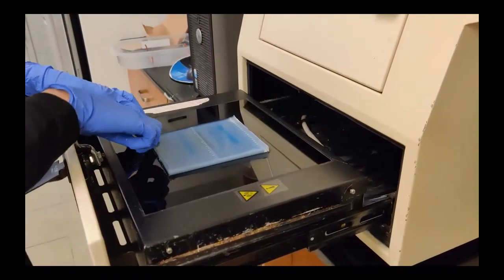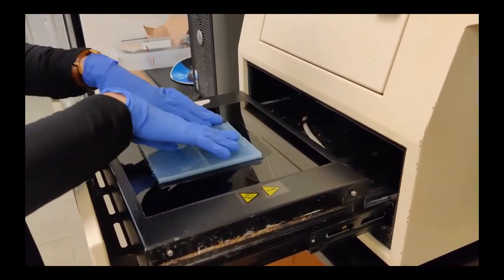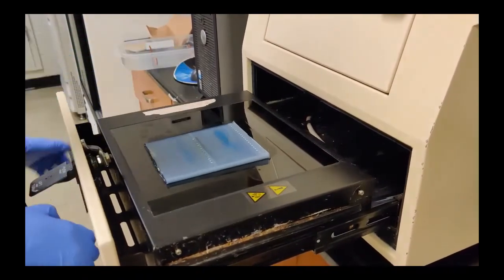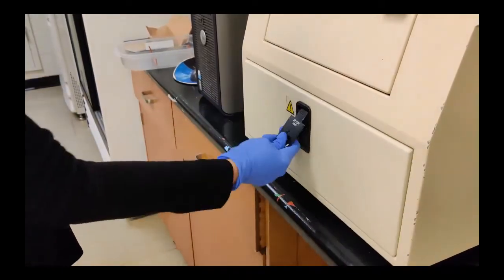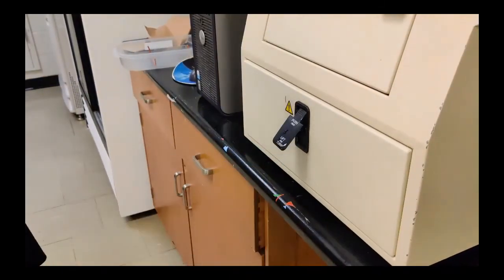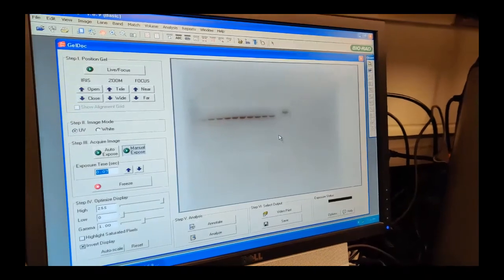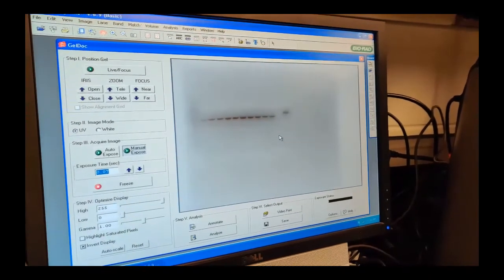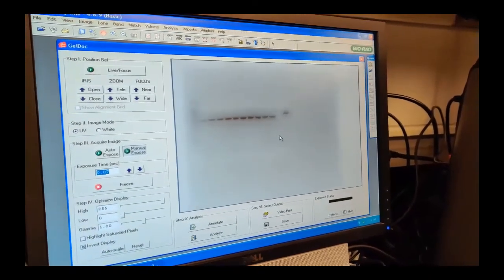First, put your gel into the machine. Now just turn on the light and we can see our DNA bands.